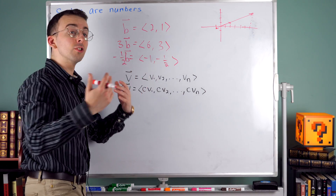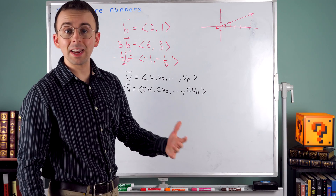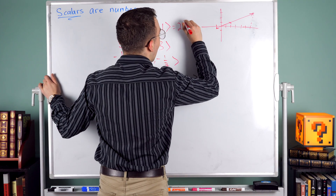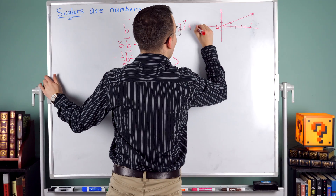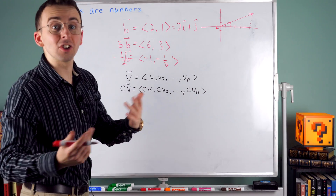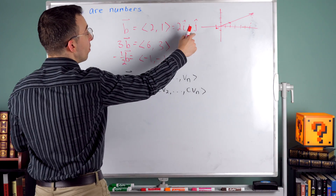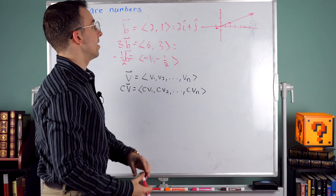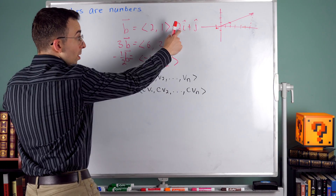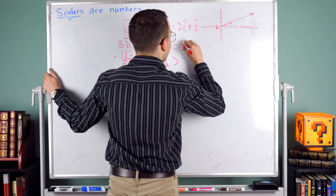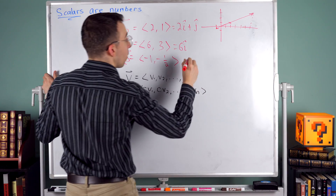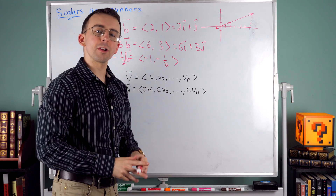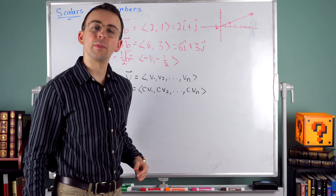This works just as nicely if you're using the basis vector representations. We could write vector B as 2î + 1ĵ, and then 3B would work just as easily — you just multiply the coefficients by the scalar of 3. So 3B in standard basis vector form is 6î + 3ĵ. If you don't know about î and ĵ, don't worry about it — I'll leave a link in the description. Let me know if you have any questions.